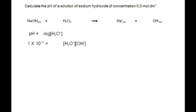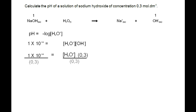The mole ratio of NaOH to OH- is 1:1, so [OH-] = 0.3 mol·dm⁻³. Substituting into the Kw expression: 1×10⁻¹⁴ = [H3O+] × 0.3. Dividing both sides by 0.3 gives [H3O+] = 3.3×10⁻¹⁴ mol·dm⁻³.